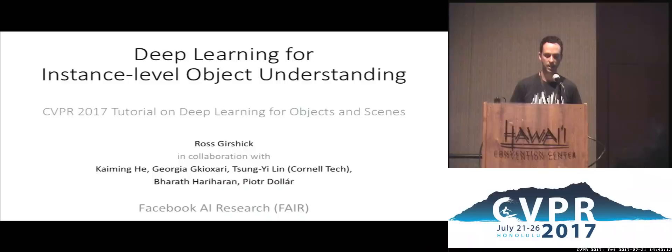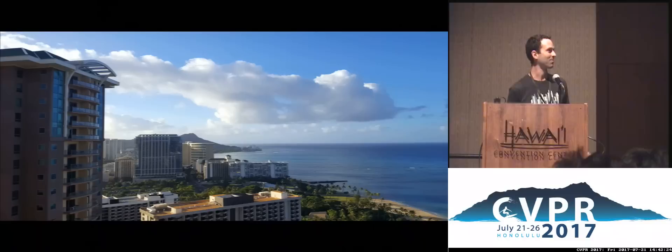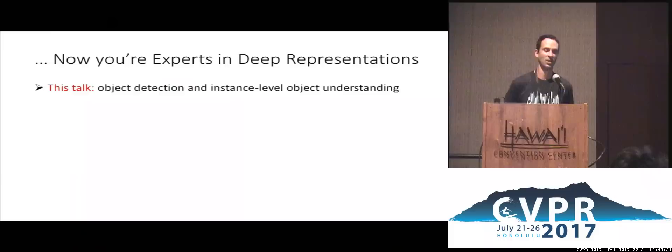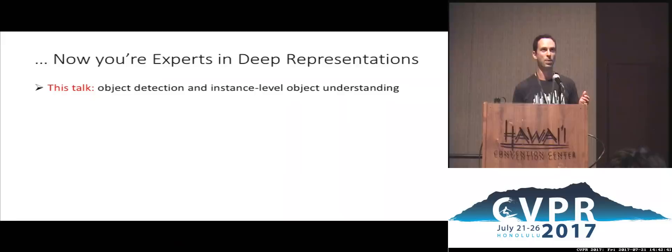This is work with collaborators at Facebook AI Research. To get started: in 2007, when Ross started his PhD, images were black and white and object detectors were not working well. Today, scenes in which we can successfully detect objects are much more complicated. Not only can we put bounding boxes around objects, but we can now provide much richer information — for example, detailed pixel-level instance segmentations. That's why the title is not just object detection but rather instance-level understanding.